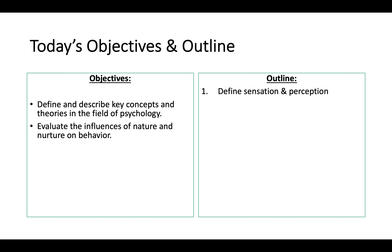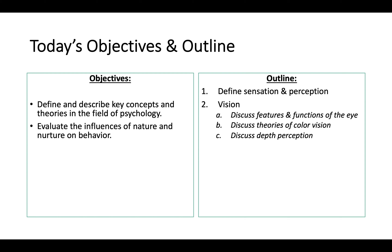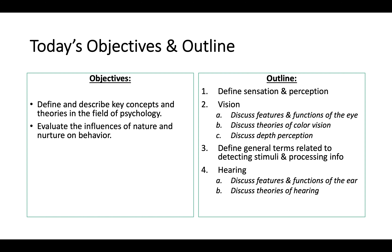For our outline, we are going to define sensation and perception. We are going to talk about vision — the features and functions of the eye, theories of color vision, and depth perception. Then we are going to define general terms related to detecting stimuli and processing information. We will spend the rest of the time talking about hearing and a couple of other senses, including olfaction and gustation.